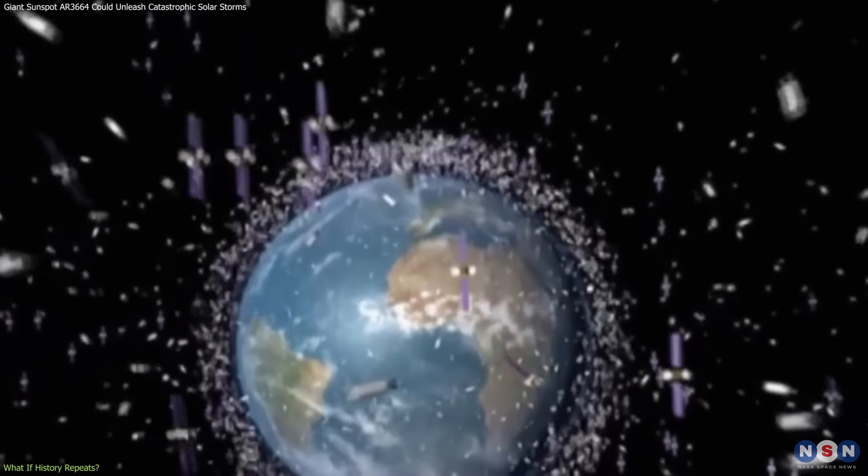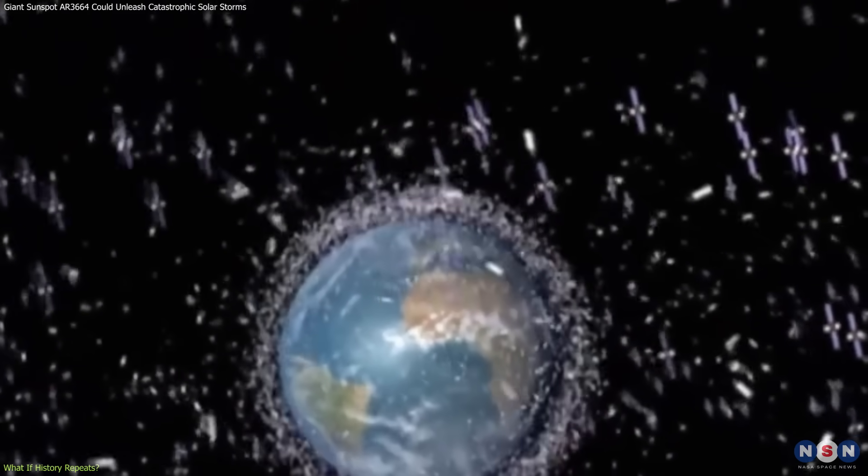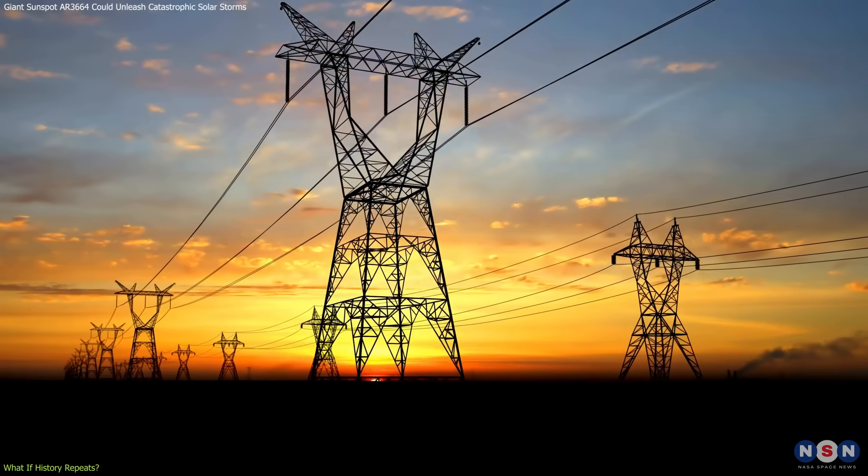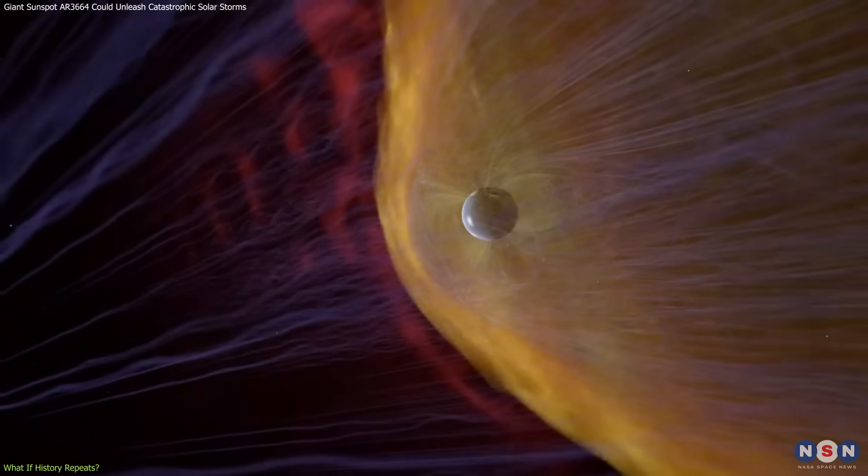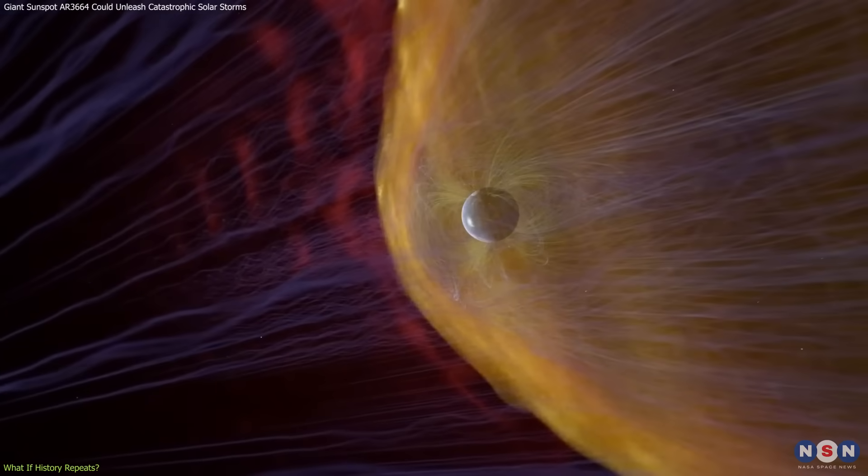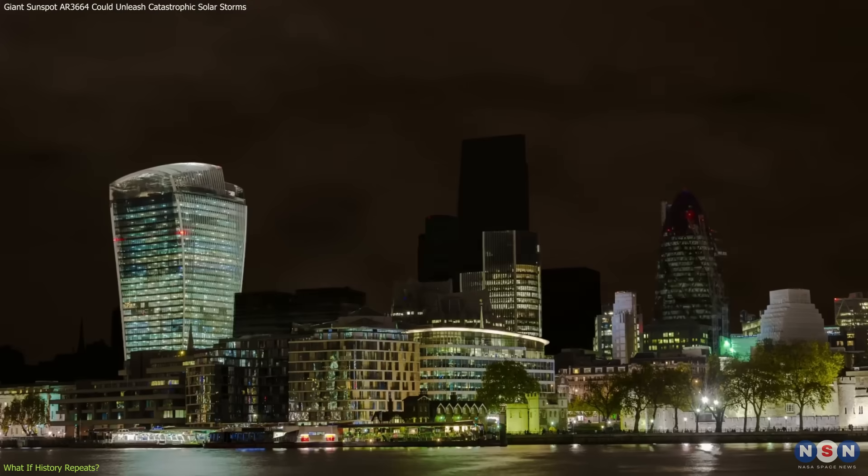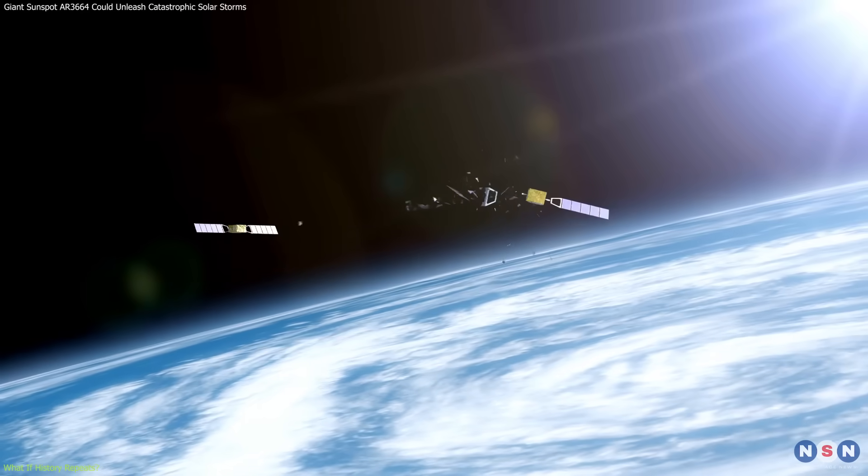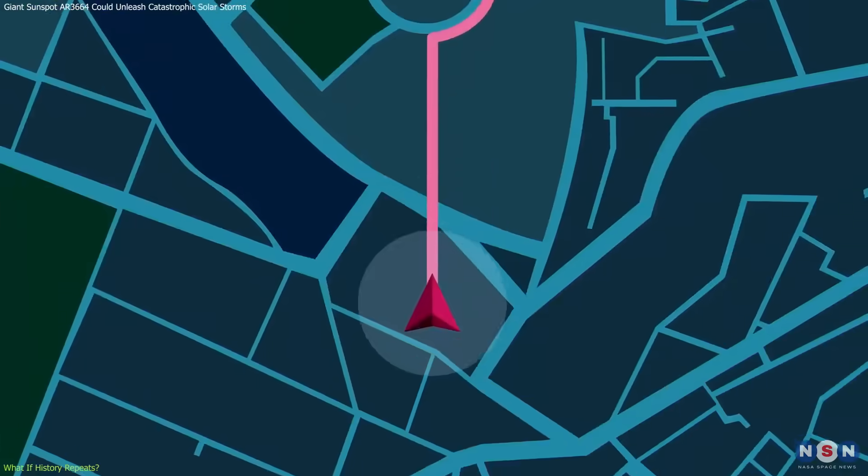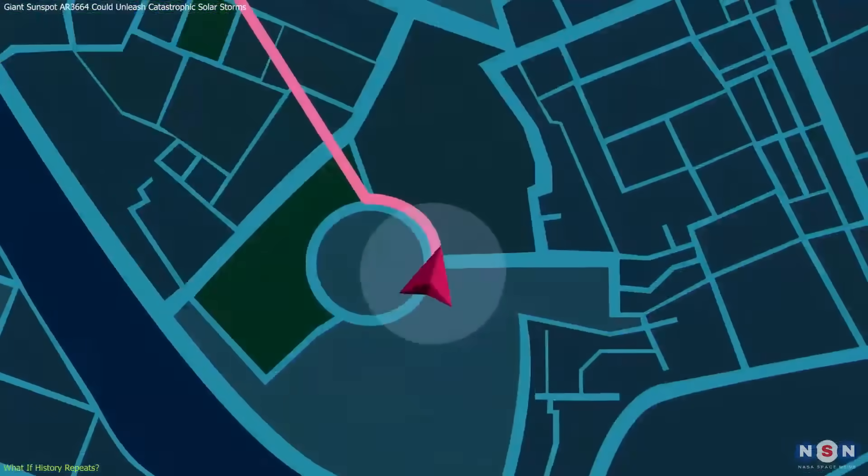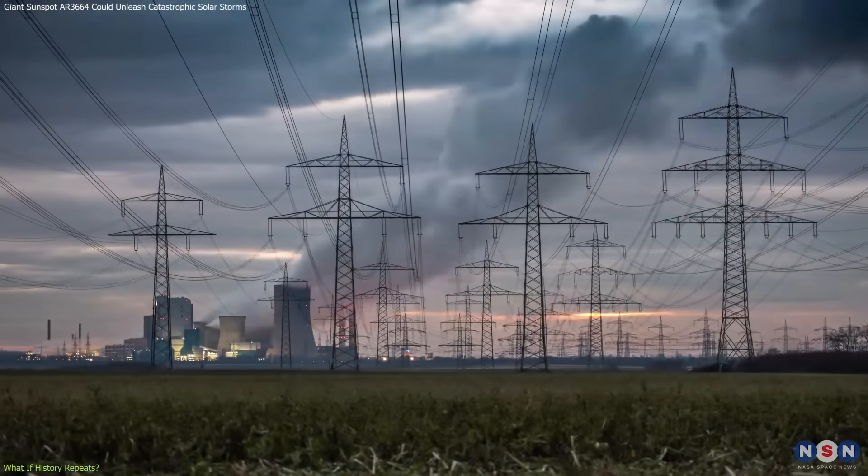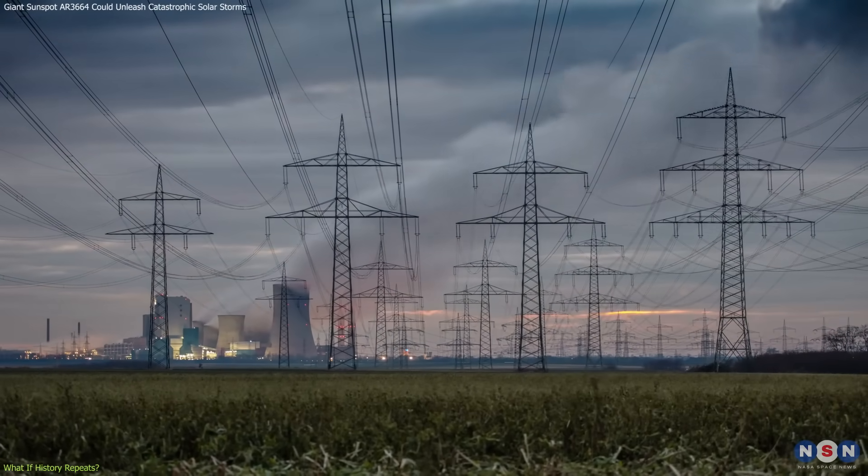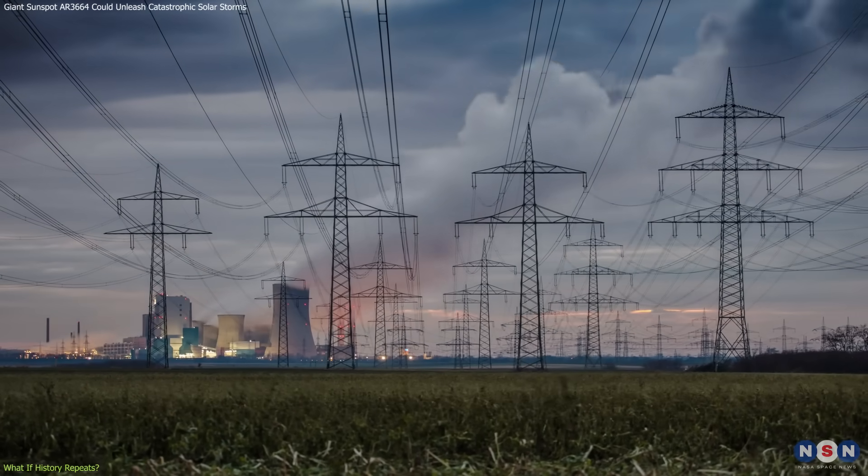Today, we live enveloped in a mesh of GPS satellites, power grids, and fiber-optic cables. A solar storm of severe magnitude striking today could lead to extensive outages. Satellite communications could be knocked offline. GPS navigation could falter. And the power grids that underpin modern civilization could fail regionally or even globally.